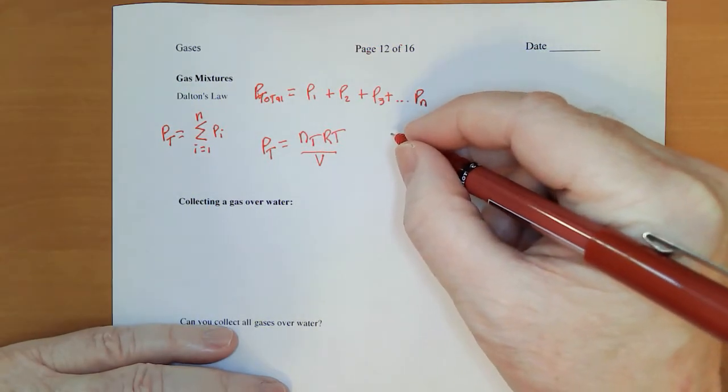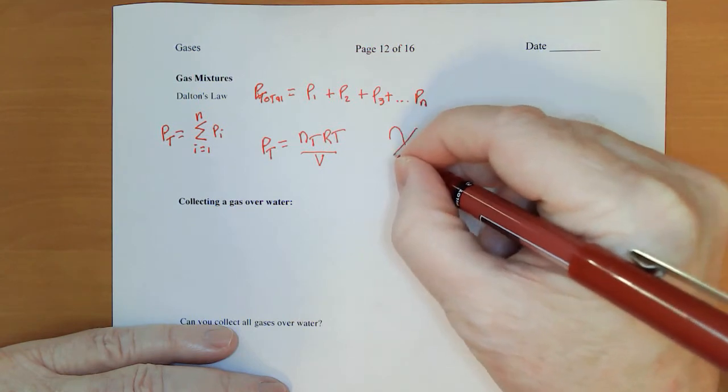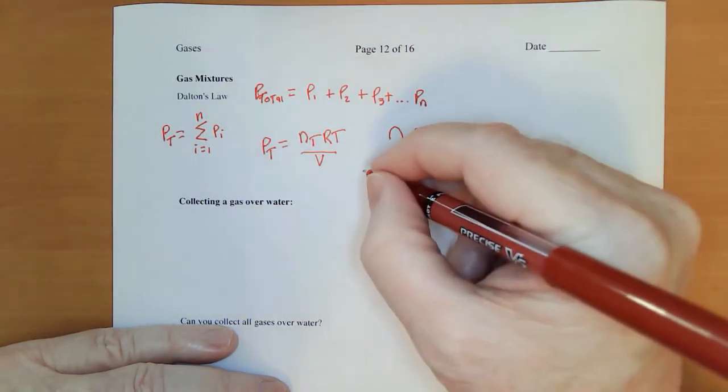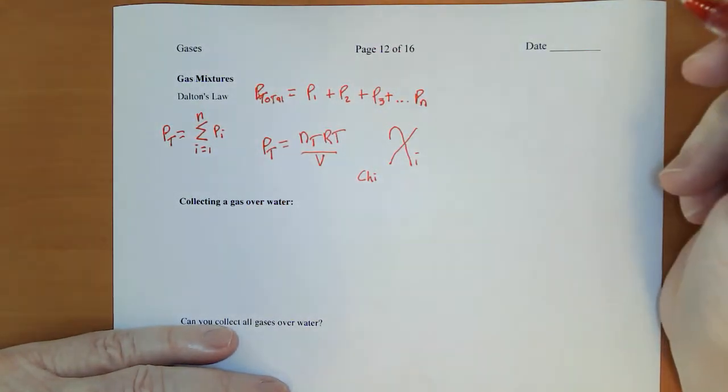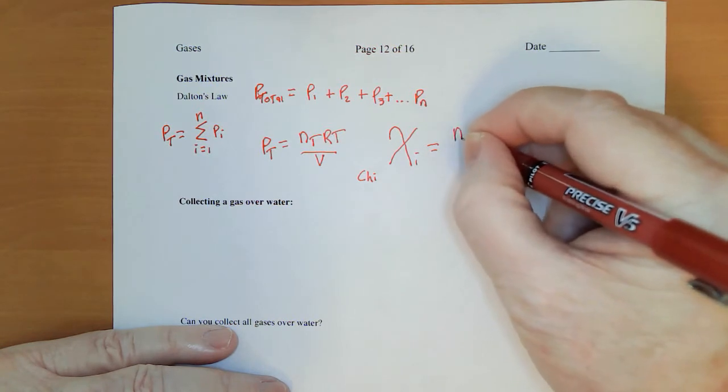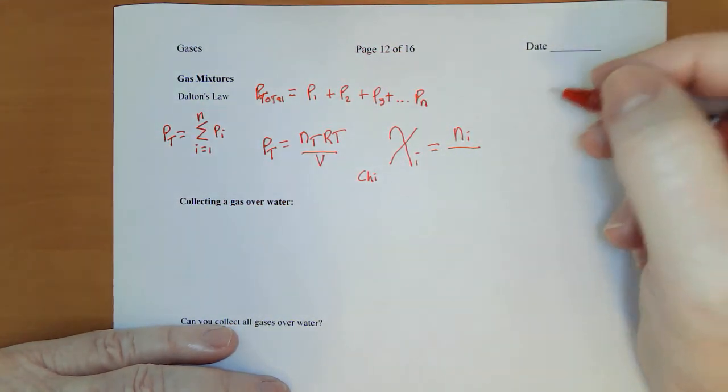Now we also have something new to introduce here, which is called a mole fraction. That is the Greek letter chi. You can look that up.